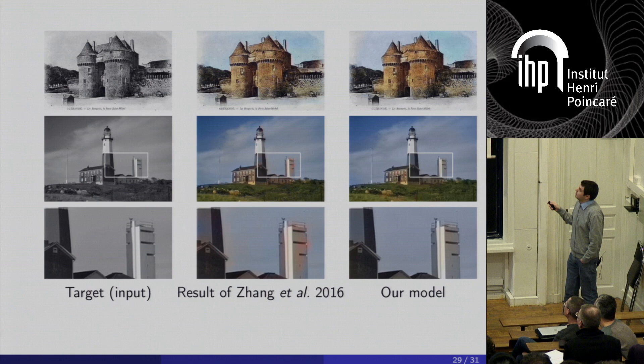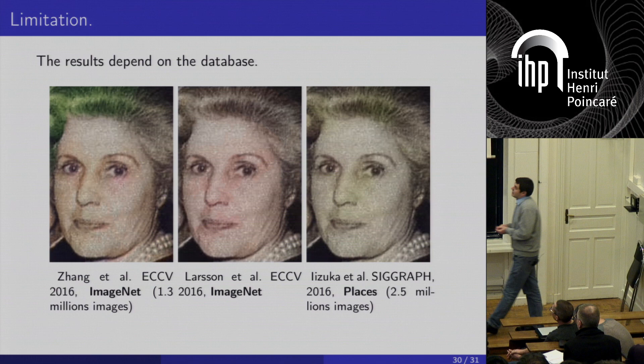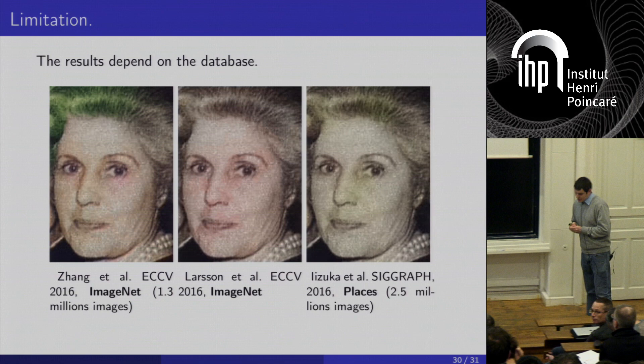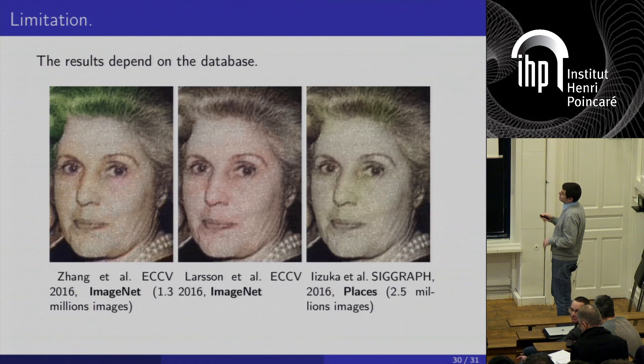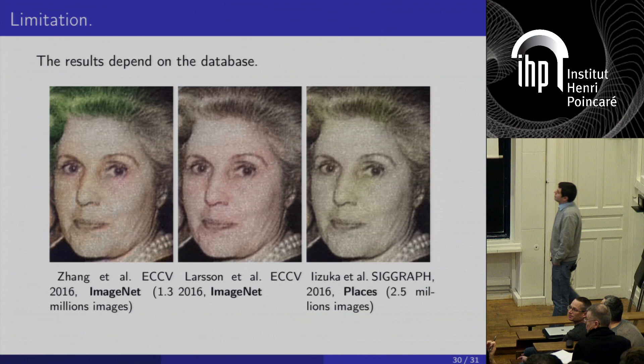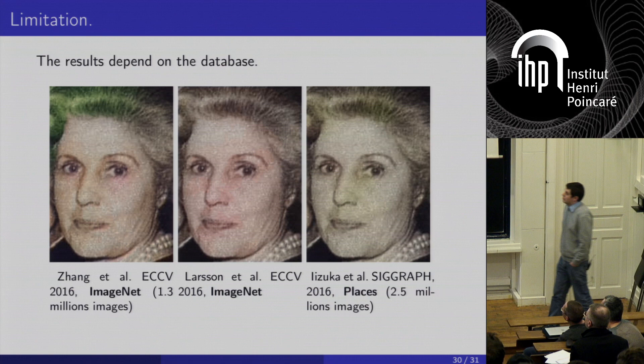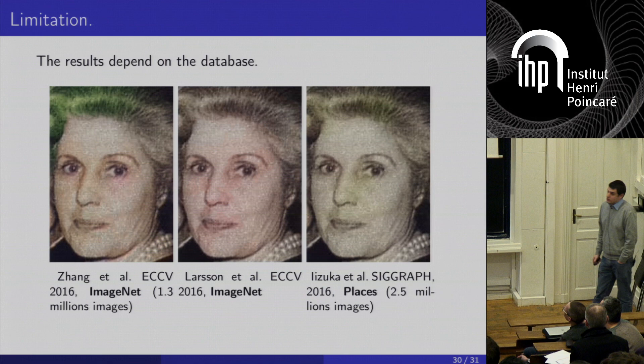Some limitations: for old face images, there can be a green artifact due to the CNN's training database. With another method this can be removed, but our variational approach cannot remove this kind of CNN artifact. For faces, the exemplar-based method still remains the best.